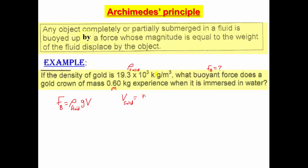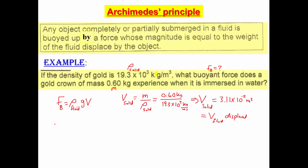The volume of the solid equals mass divided by its density, from the equation density equals mass over volume. Plugging in the values: mass is 0.6 kilogram and density is 19.3 times 10 to the power 3 kilogram per cubic meter. The volume of the solid comes out to be 3.11 times 10 to the power negative 5 cubic meter, which equals the volume of the liquid displaced. We then plug into the buoyant force equation: density of water is 1000 kilogram per cubic meter, g is 9.8 m/s², and volume is 3.11 times 10 to the negative 5 cubic meter.